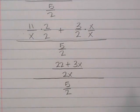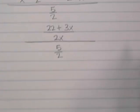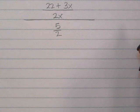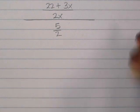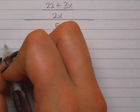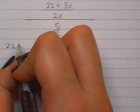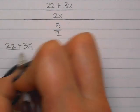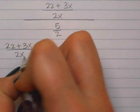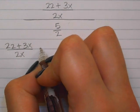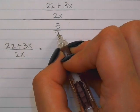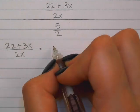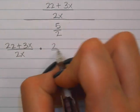At this point I can say that's a fraction divided by a fraction. So now I can go ahead and keep it, change it, flip it. I'm going to say 22 plus 3x over 2x, change it to a multiplication problem, and then flip the bottom: 2 over 5.